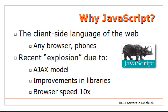The starting point is why we want to use JavaScript. Because if we want to have our applications running in the browser, that's almost the only option. There are other alternatives like Flash or Silverlight, but JavaScript is the only client-side language of the web that is available everywhere — every browser, every phone, every device. JavaScript has been around a long time, but there's been a recent explosion of JavaScript due to the new Ajax model. You can do things without moving outside of the page, and there has been improvement in libraries, for example jQuery, but many others. And also browser speed.